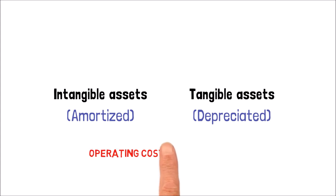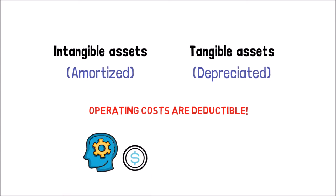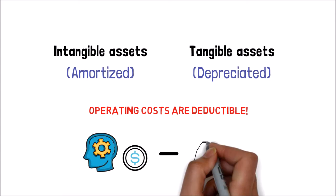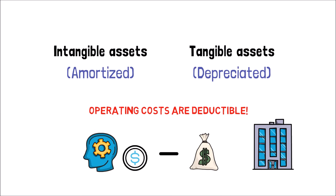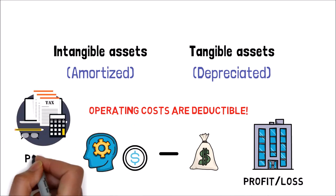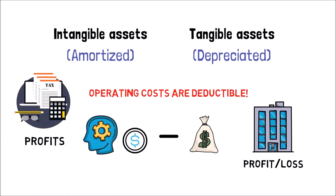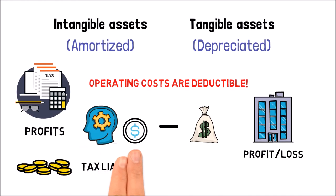Operating costs, however, are fully deductible. This means that operating expenses may be subtracted from revenue when calculating the company's profit and loss. Since most firms are taxed on their profits, any expenditures deducted from the top directly influence your tax liability.